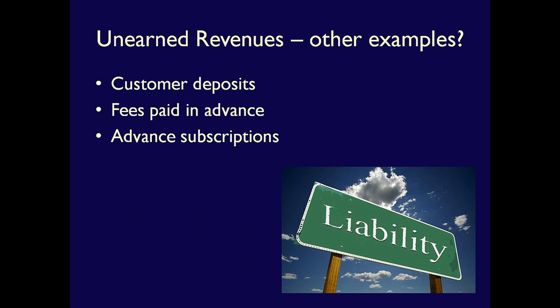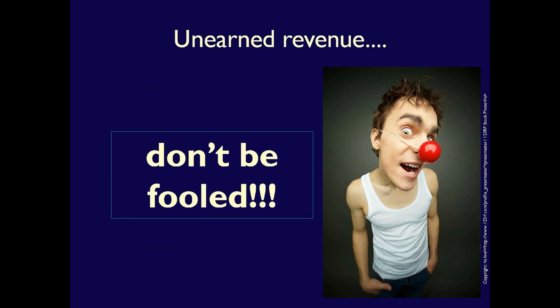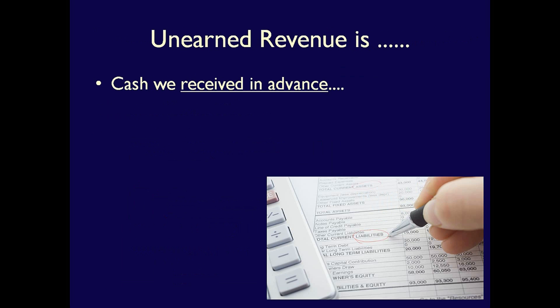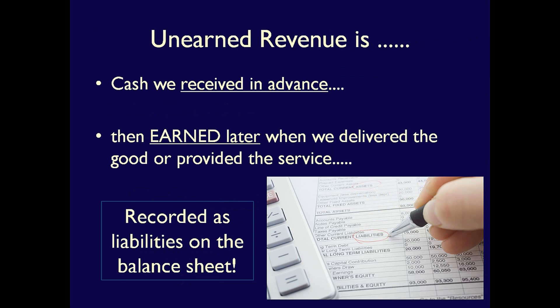Unearned revenue might also be called things like customer deposits, fees paid in advance, advanced subscription, or any number of other names. The accounts may have different names, but they all mean the same thing — a customer has provided cash to the company but didn't receive anything in return. The company owes them a good or service in the future. Don't be fooled: unearned revenue is cash received from a customer in advance of doing anything for that customer. We earn it later when we deliver the goods or provide the service. Unearned revenues are liabilities on the balance sheet, most often under current liabilities.